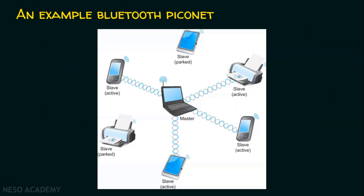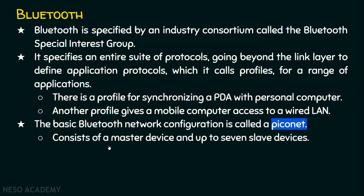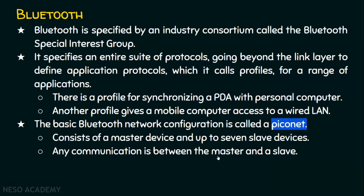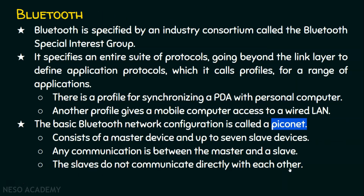Here is an example Piconet where we have a master node connected with many slave nodes. In a Piconet, there is only one master node and up to seven slave nodes. Any communication is between the master and a slave — no two slave nodes can communicate with each other directly. All slave-to-slave communication must go through the master device.